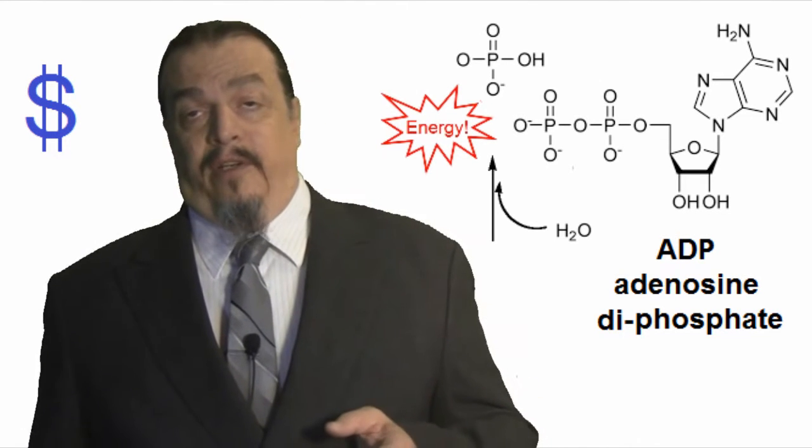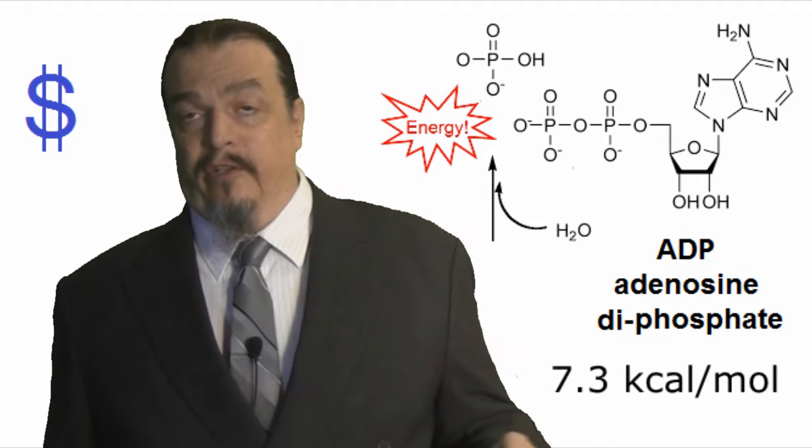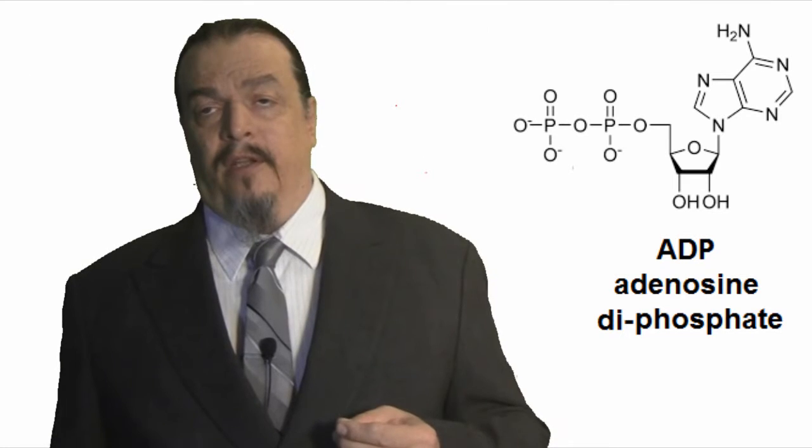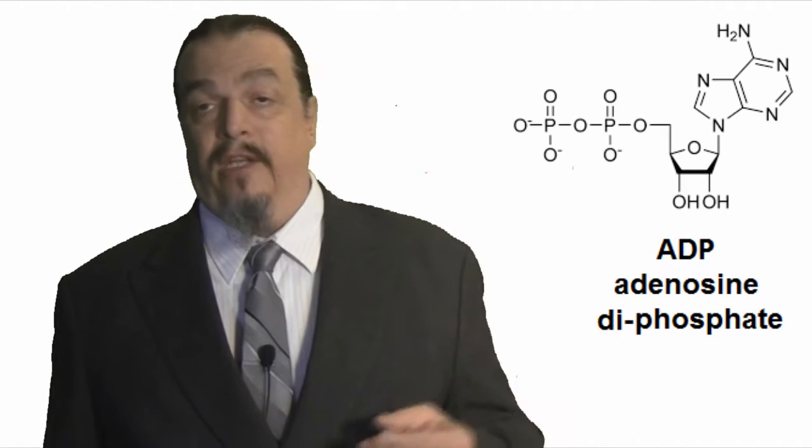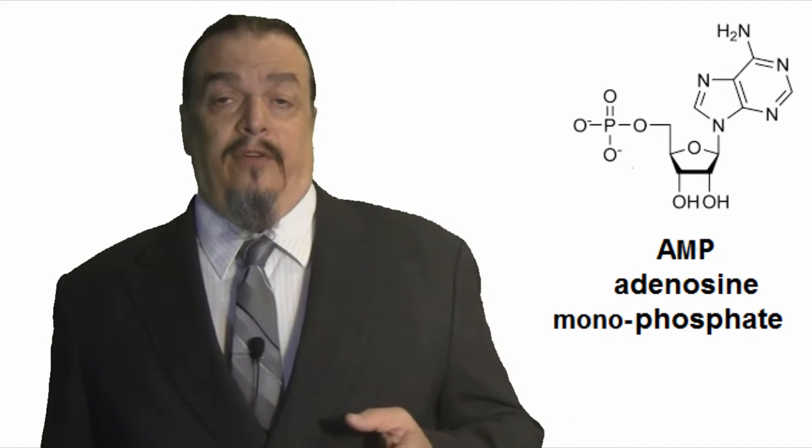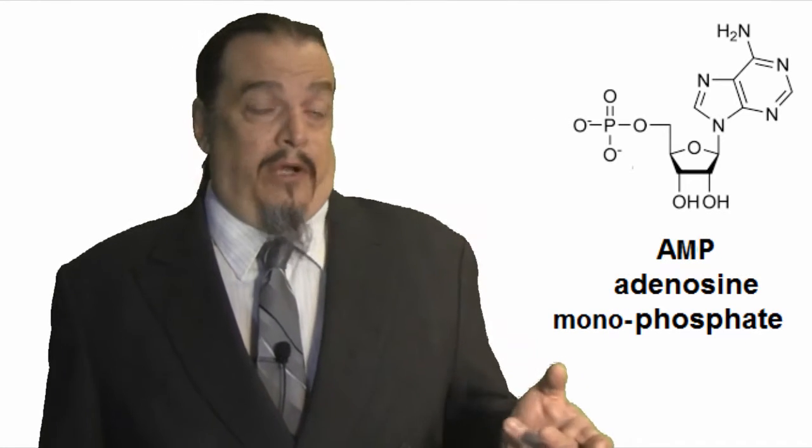These are high energy bonds and 7.3 kilocal per mole of energy are released whenever the bond is broken. If you break one phosphate group off the molecule, it's called ADP or adenosine diphosphate, di meaning two. If only one phosphate group is left, it's called AMP, adenosine monophosphate, mono meaning one.